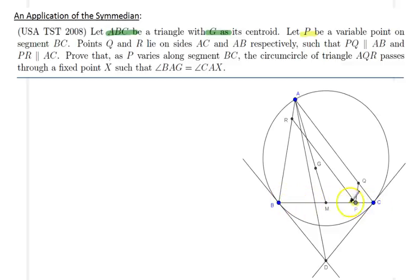P is a variable point on BC, so that's the location of P. P is actually moving between B and C. Accordingly, the points Q and R are chosen on AC and AB such that PQ is parallel to AB and PR is parallel to AC, as you can see in the picture.